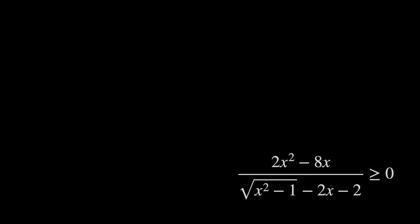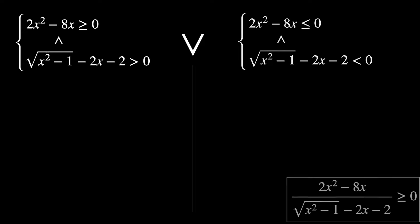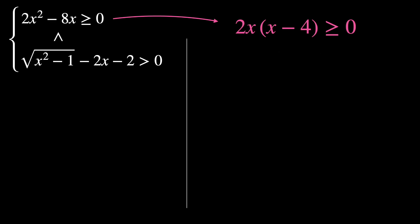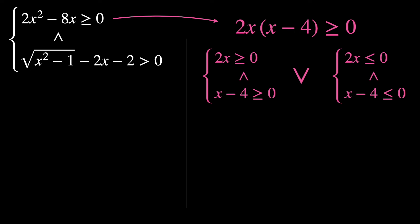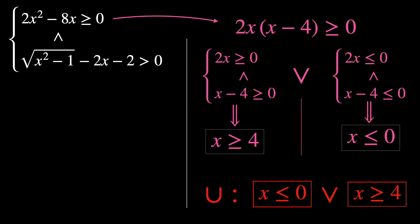Now we're ready to study the signs of the numerator and denominator. The fraction is non-negative, so either both numerator and denominator are non-negative, or both are non-positive — the denominator is always non-zero. In the first inequality, we factor the polynomial into 2x times (x − 4) ≥ 0. This gives two options: either both factors are non-negative, yielding x ≥ 4, or both are non-positive, yielding x ≤ 0. Since their relation is OR, we unite both: x ≤ 0 or x ≥ 4.